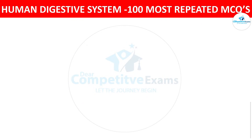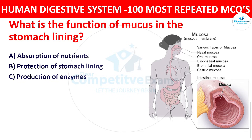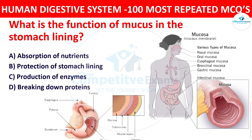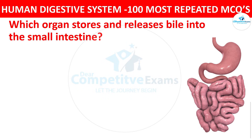Question number eleven: What is the function of mucus in the stomach lining? The options are absorption of nutrients, protection of stomach lining, production of enzymes, or breaking down proteins. The right answer is protection of stomach lining. The mucus in the stomach provides a protective barrier against the corrosive effects of stomach acid.